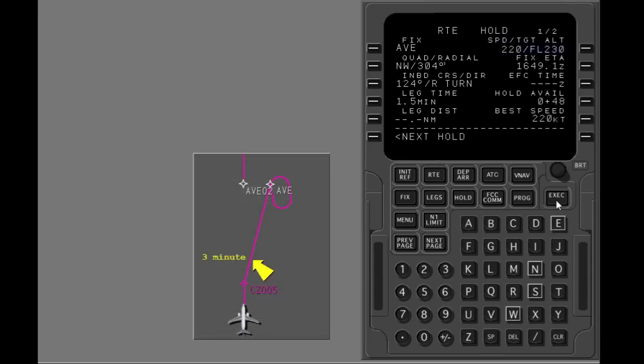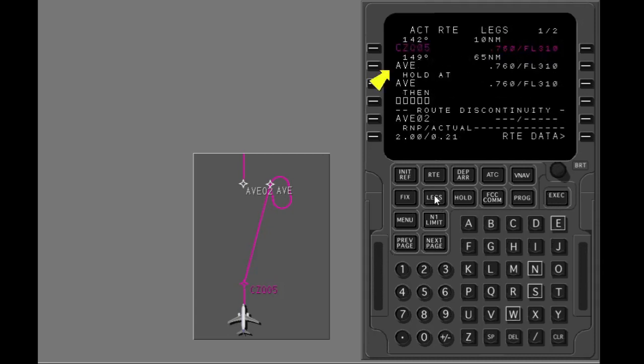The holding pattern dimension is small to prevent clutter, and becomes normal when the airplane is 3 minutes away from the holding fix. Show the legs page. The FMC put in Avenal as a waypoint on the line you selected, and the holding pattern was put in on the next line. The FMC put a discontinuity in the route after holding.